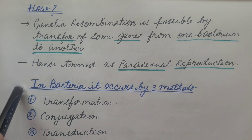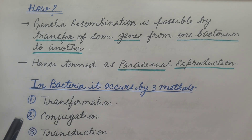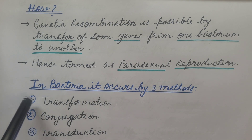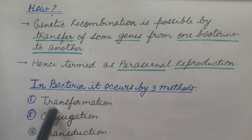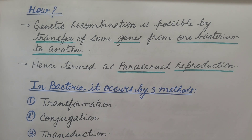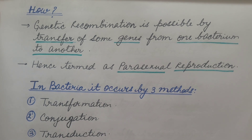In bacteria, parasexual reproduction occurs by three methods: transformation, conjugation, and transduction. Here we are going to see transformation and conjugation, so let us see them one by one.